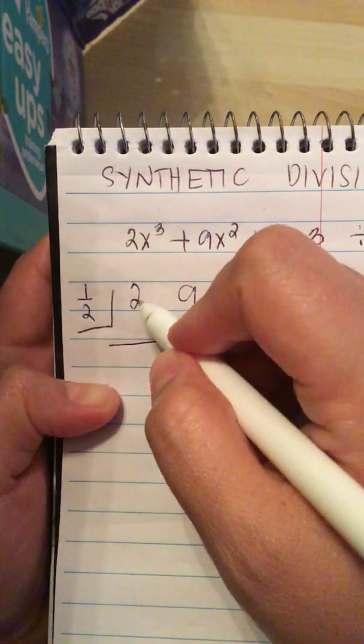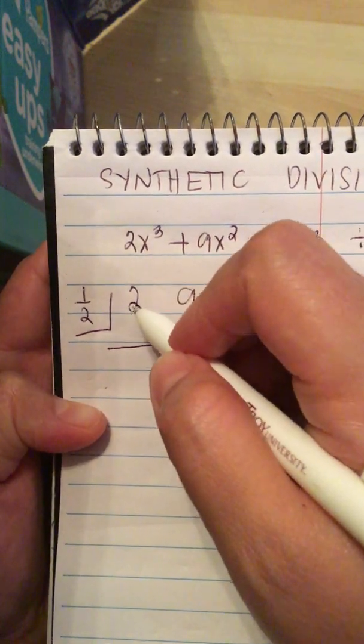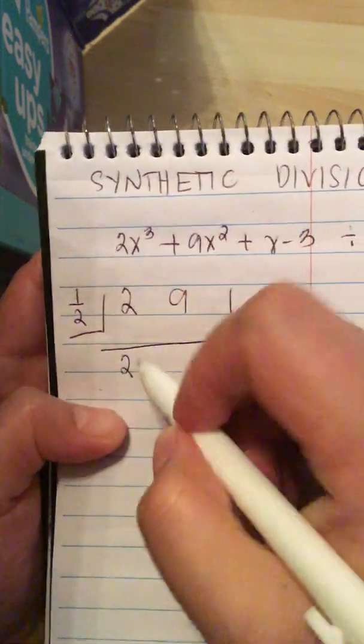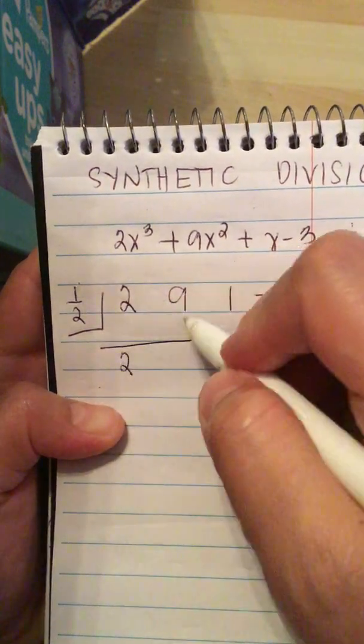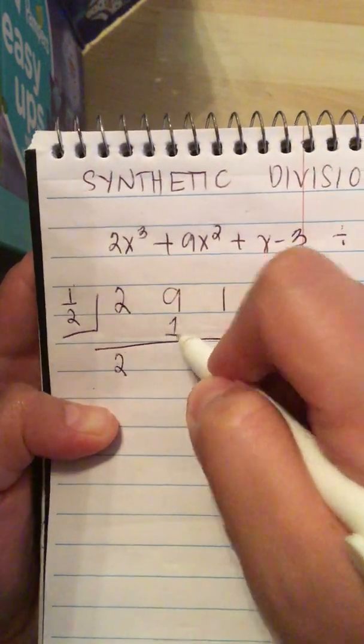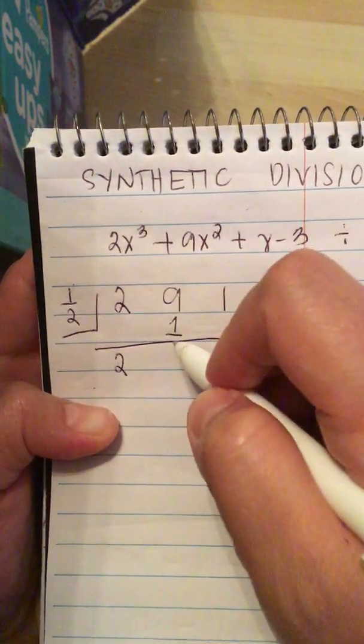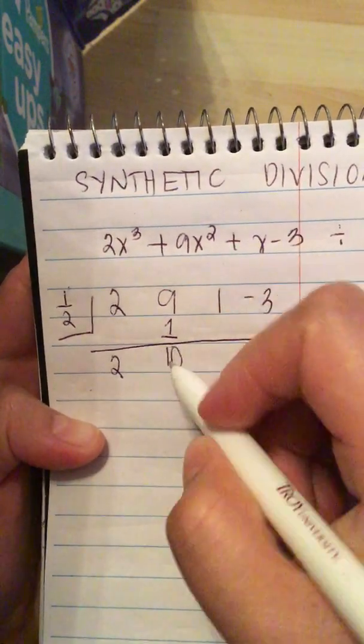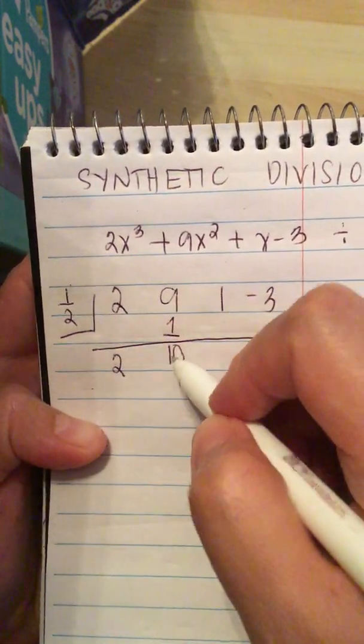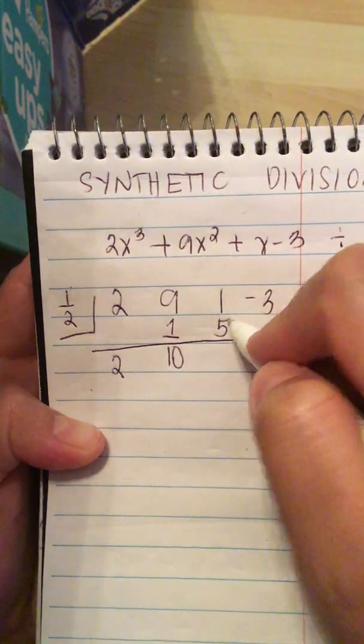So the first thing we do is to write down the 2 here. And then 1 half times 2 is 1. And then we combine 9 and 1. This is 10. And then we multiply 10 times 1 half, and it is 5.